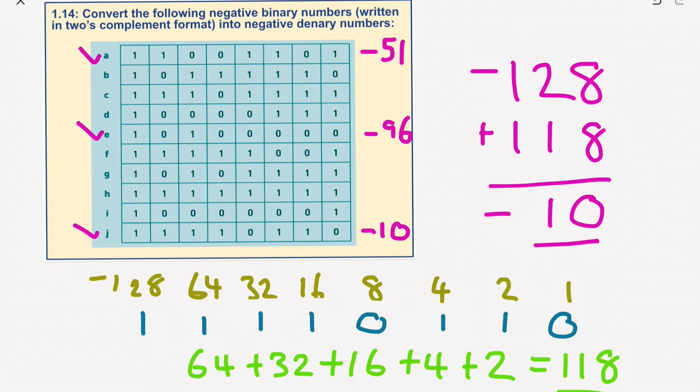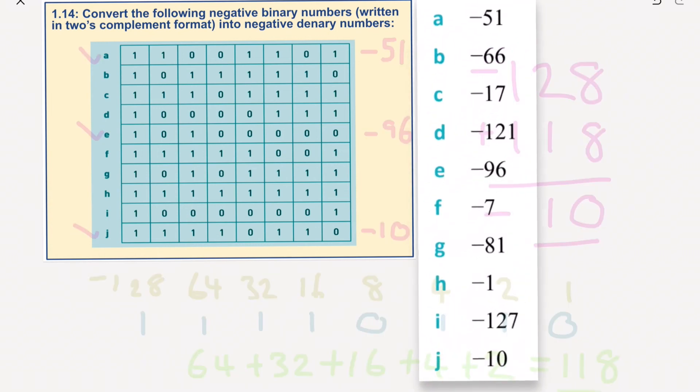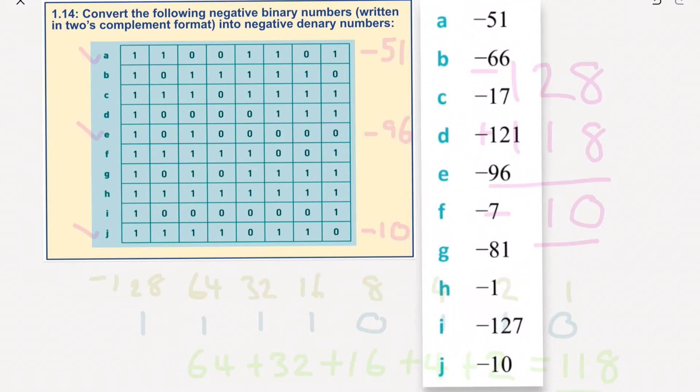Let's bring in the answers and see if we've done this correctly. And as you can see there, yes, minus 51, minus 96, minus 10 were the ones we had, but we've got minus 66 for B, minus 17, minus 121, minus 96, minus 7, minus 81, minus 1, minus 127, and minus 10.